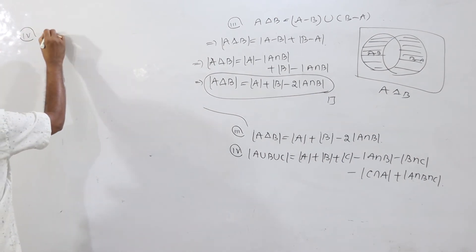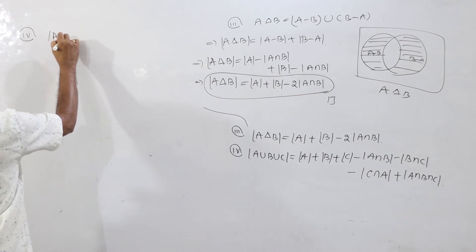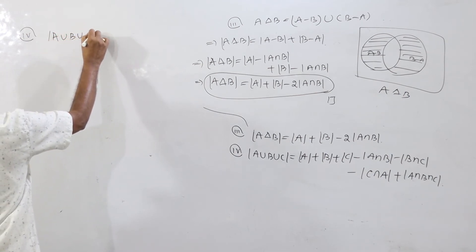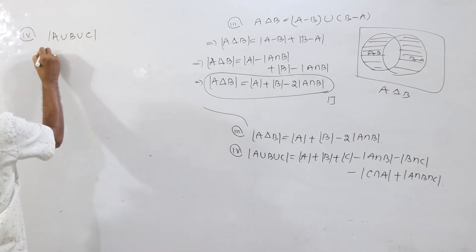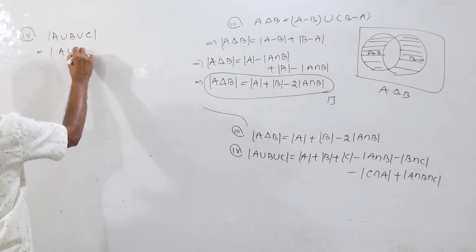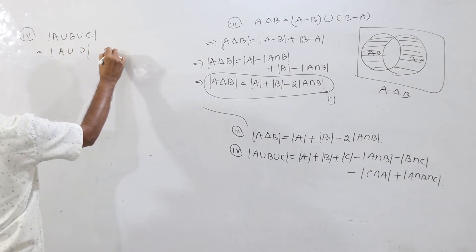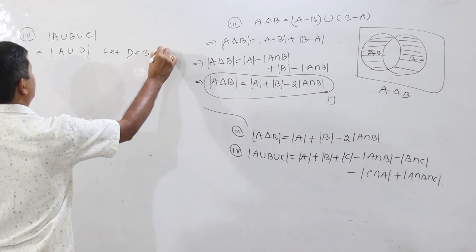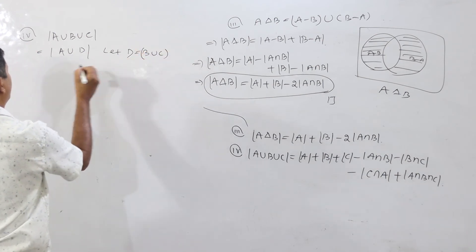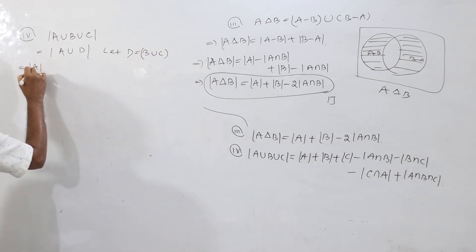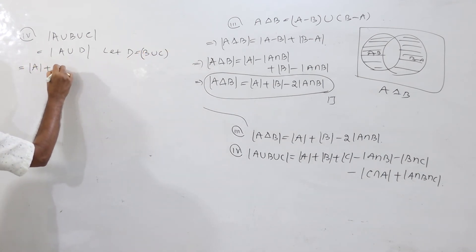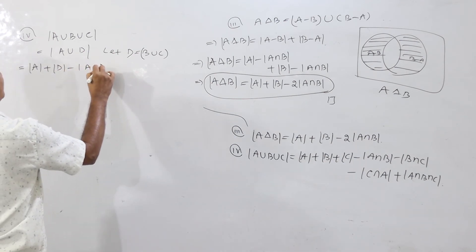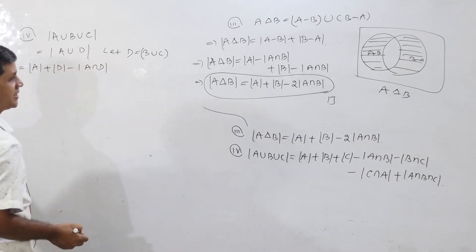For the fourth result, write cardinality of A union B union C as cardinality of A union D, where D equals B union C. Applying the first result, this equals cardinality of A plus cardinality of D minus cardinality of A intersection D.